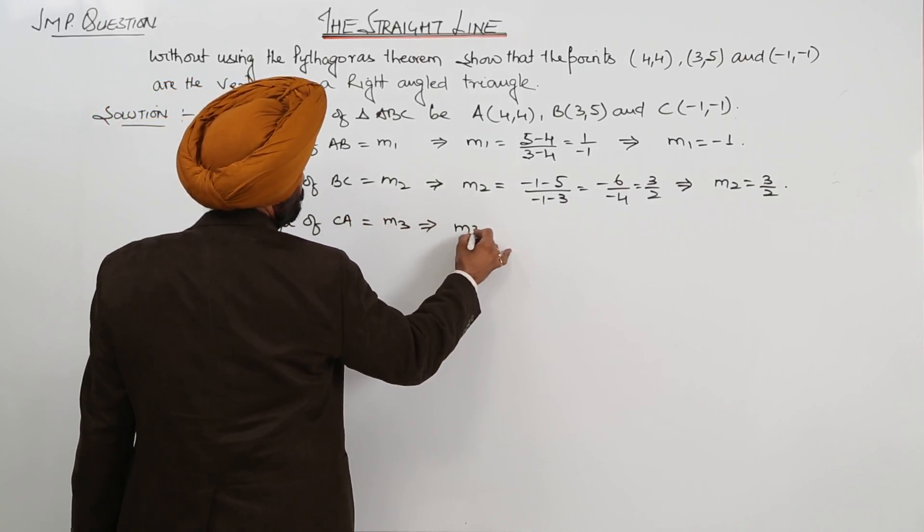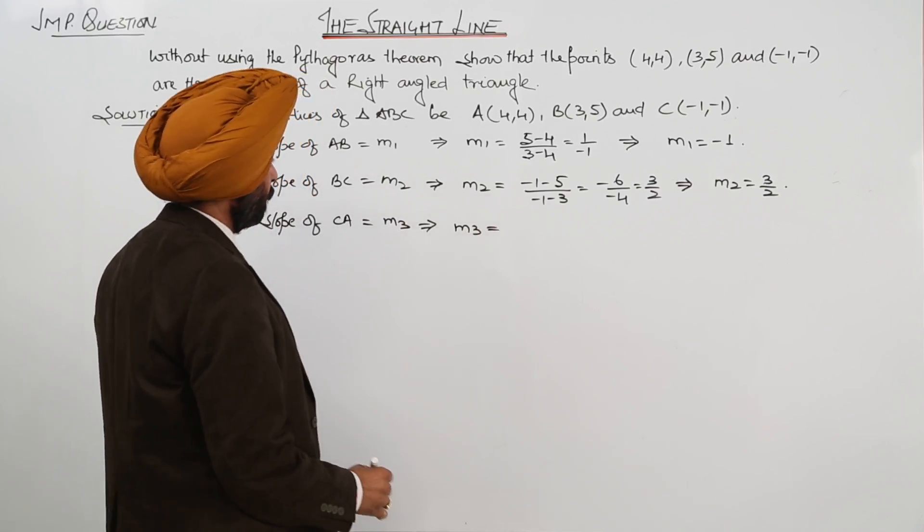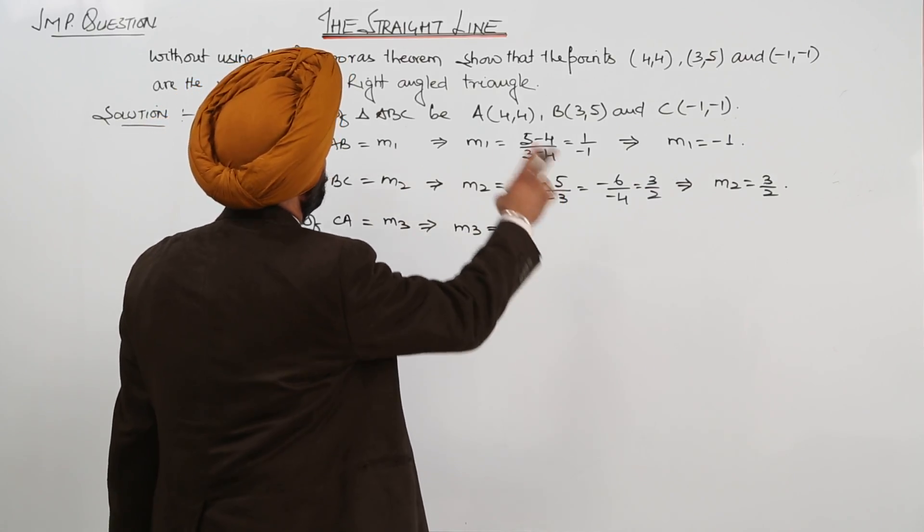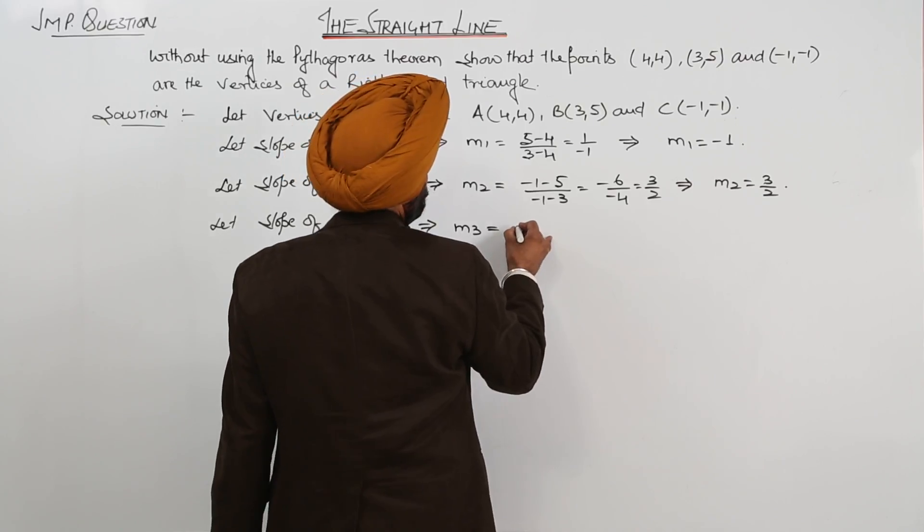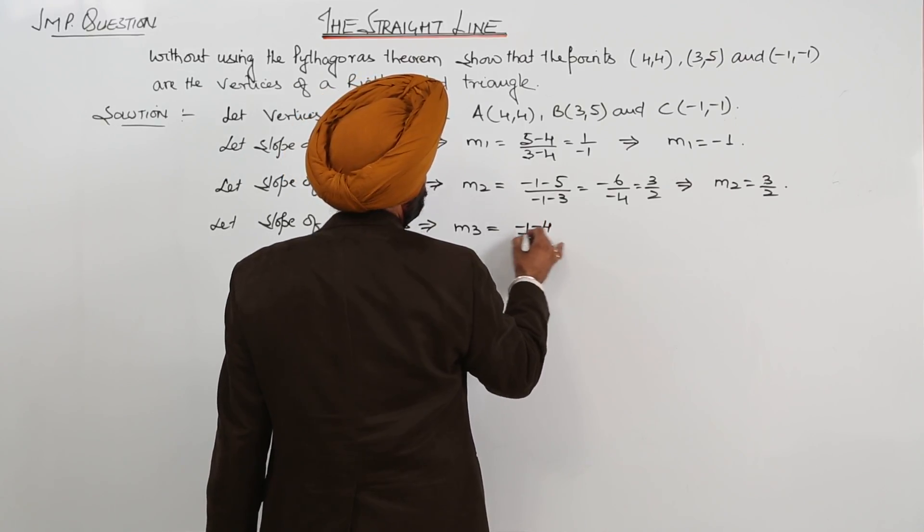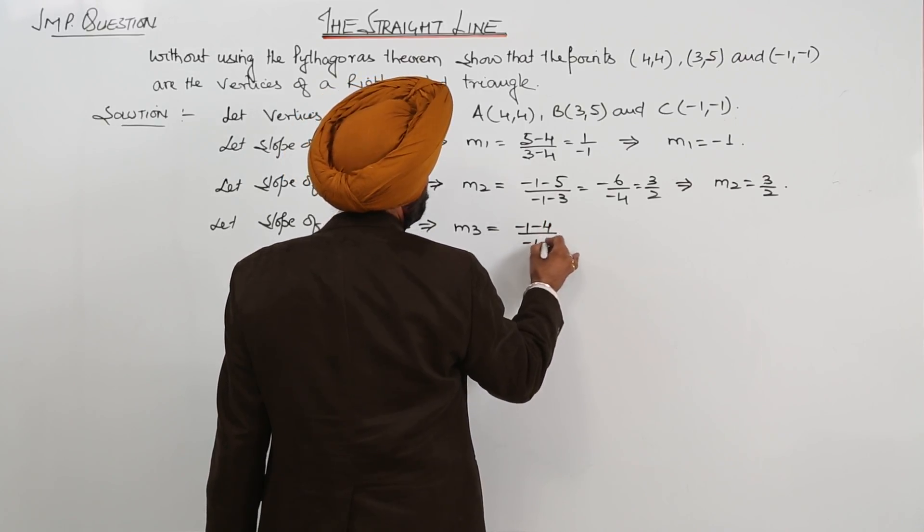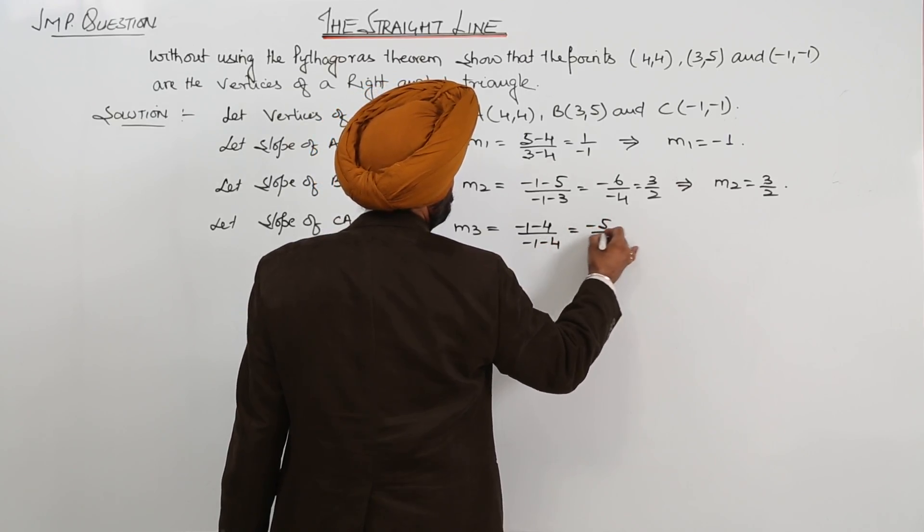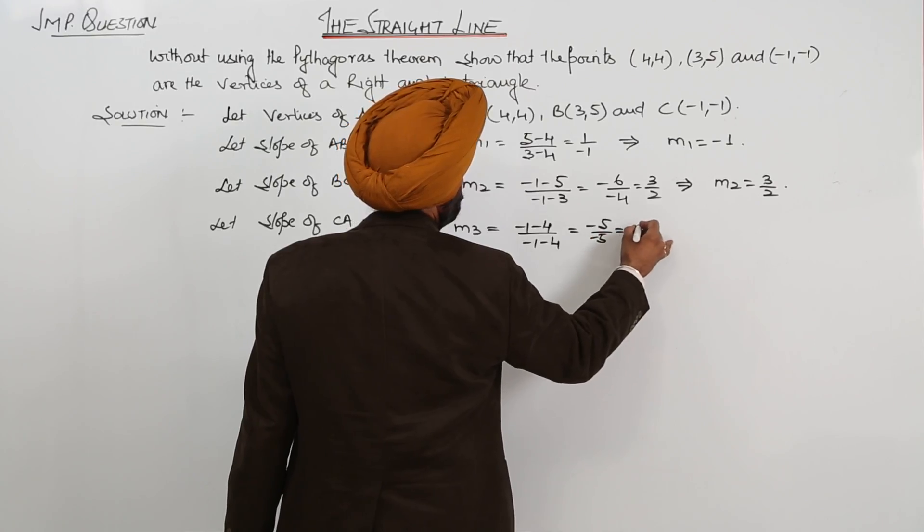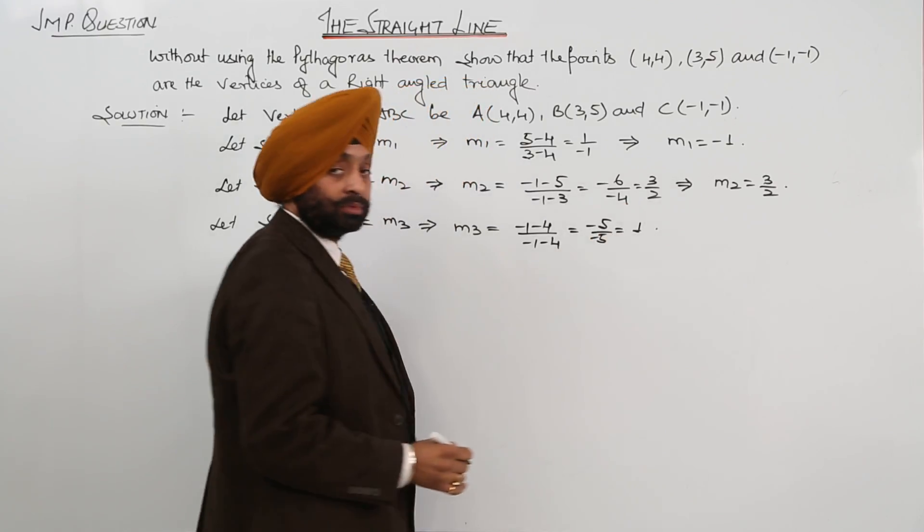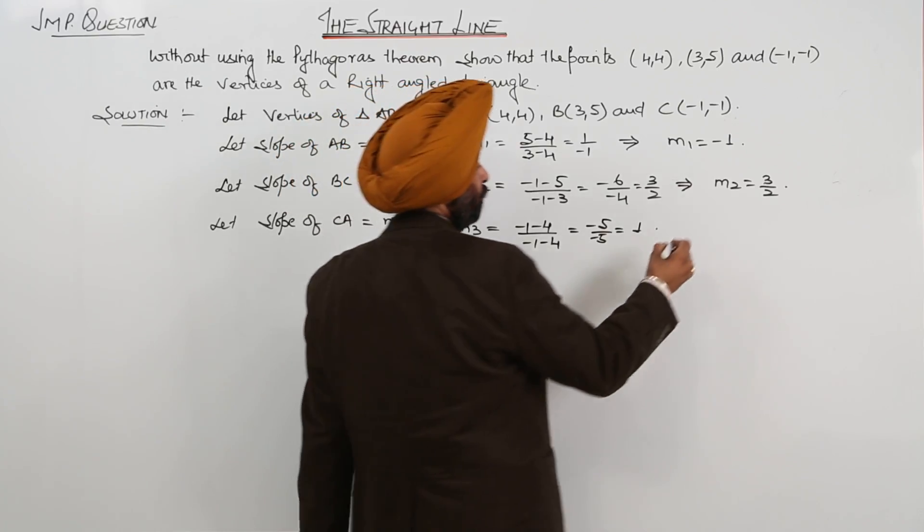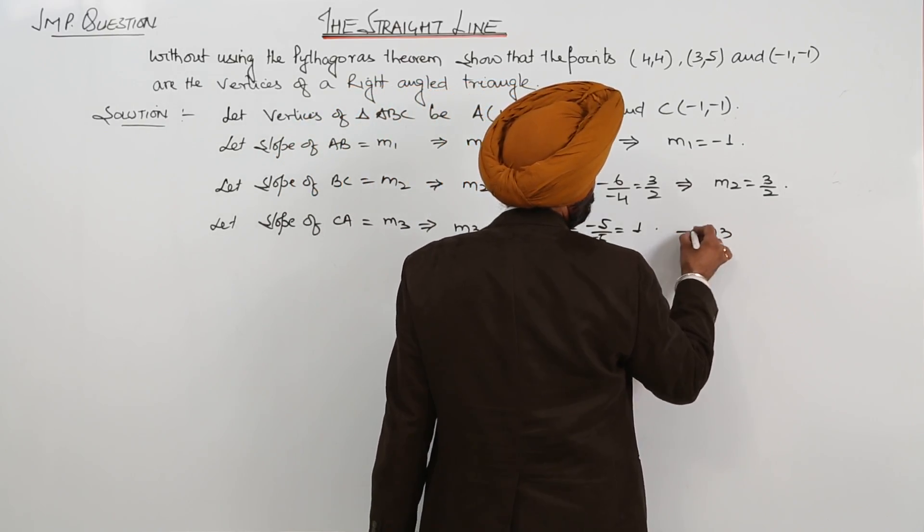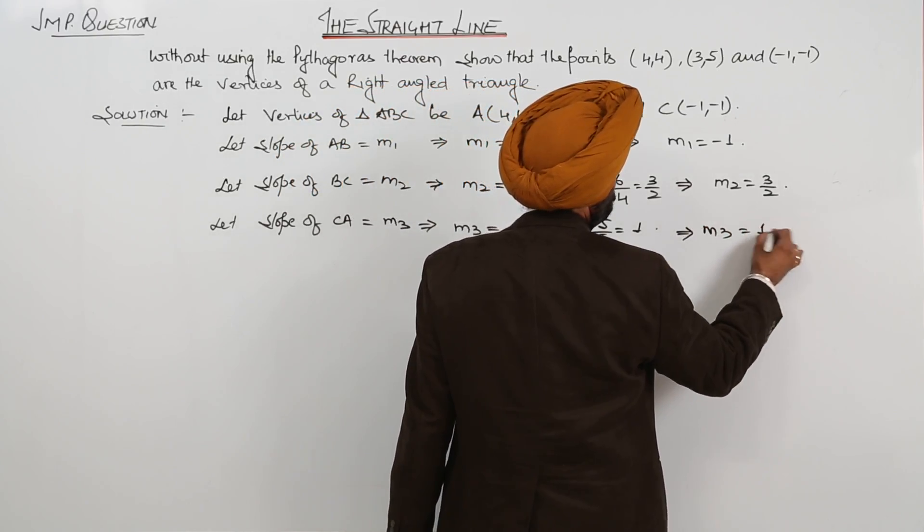Now, M3 will be C and A. Negative 1 minus 4 upon negative 1 minus 4. This equals 1. So M3 equals 1.